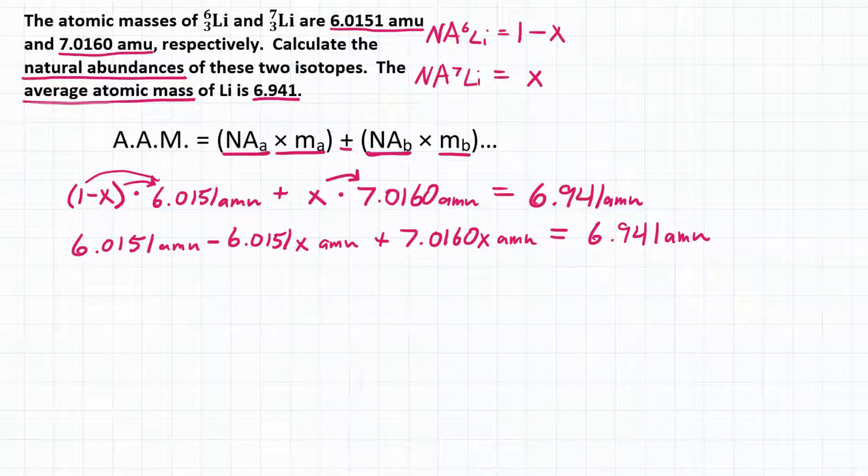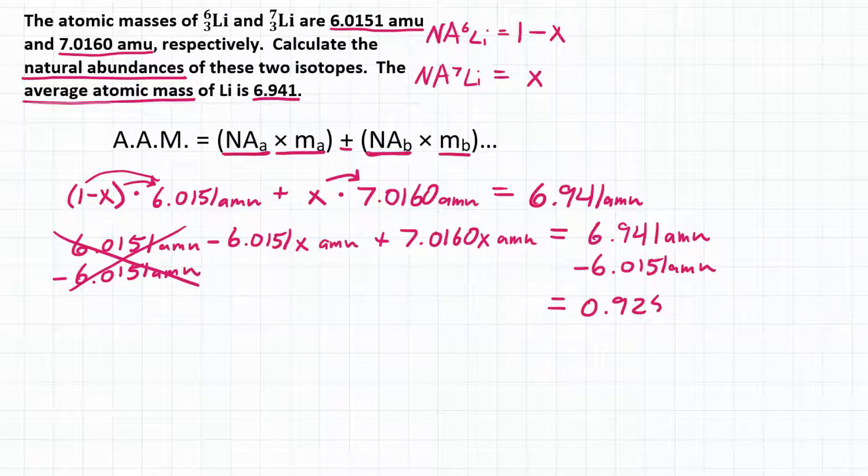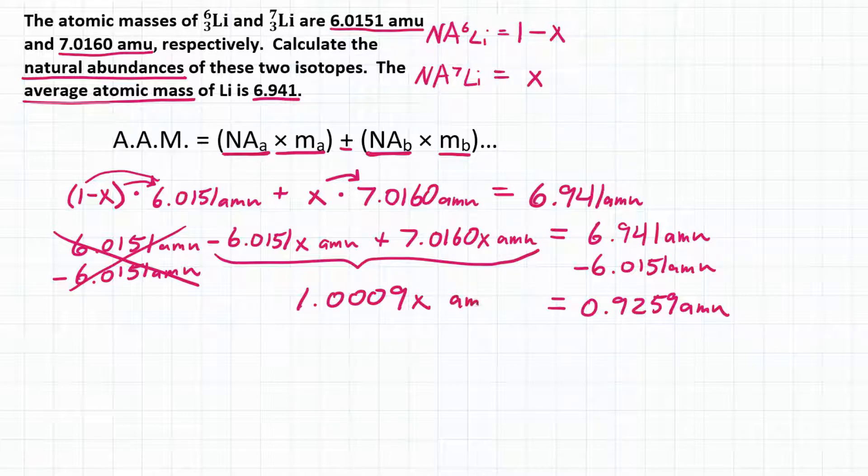Okay, now to get rid of our 6.0151 AMUs on the left, we're going to subtract that from both sides. So we'll do it on the left, and we have to do it also on the right of the equal sign. And that will effectively cancel out on the left. And then on the right side, we will end up with 0.9259 AMUs. And then on the left, we're also going to group all of this together. So we're going to take negative 6.0151 X and add that to 7.0160 X, and we get 1.0009 X AMUs.